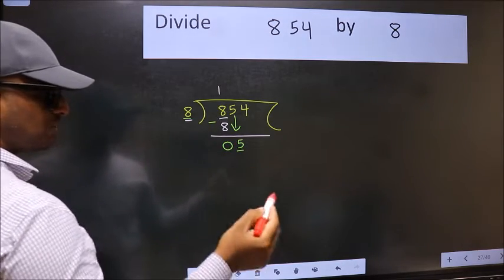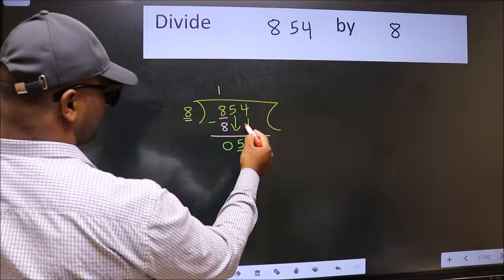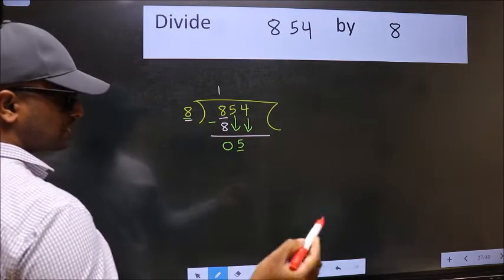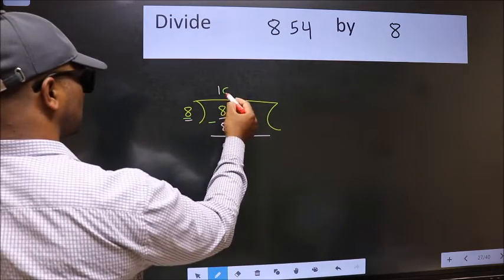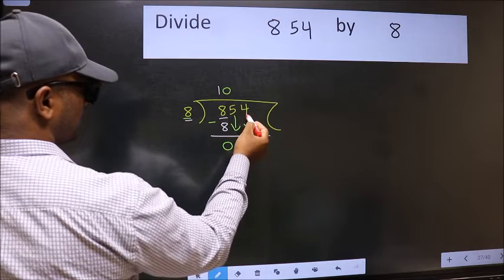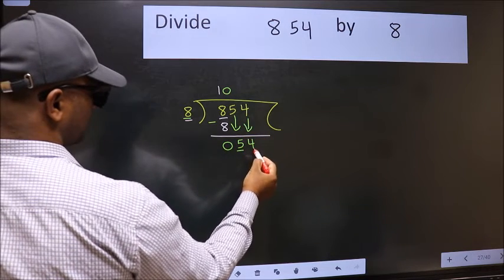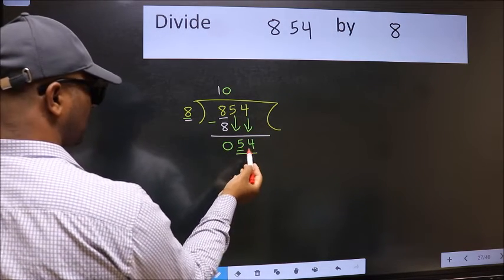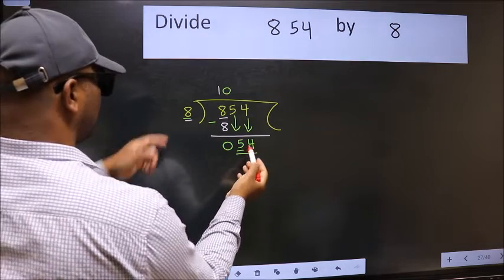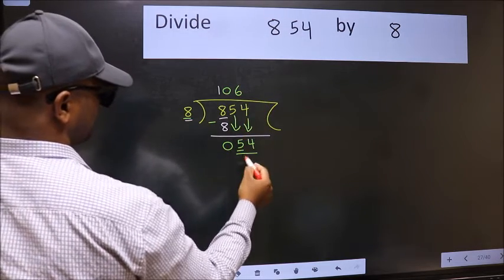So we should bring down the second number here. And the rule to bring down the second number is we should put 0 here. Then only we can bring this number down. Now 54. A number close to 54 in the 8 table is 8 times 6, 48.